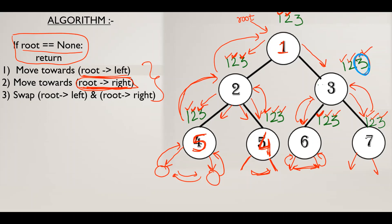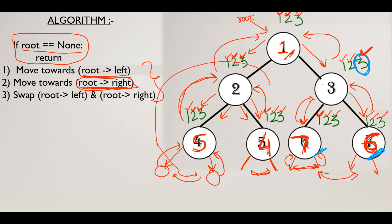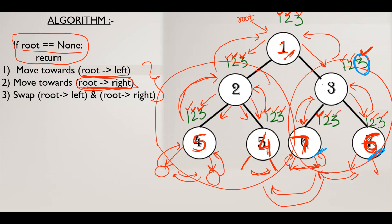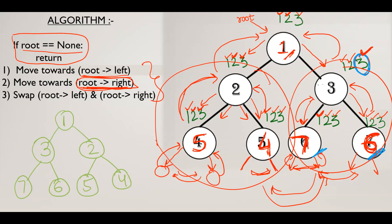On the third step of the three node, it swaps six and seven — root.left and root.right — so here we get seven and here six. After completing this third step on the three node, it returns, and then the third step of the one node swaps these two groups. So the final result is: one at the root, with three on the left having seven and six as children, and two on the right having five and four as children. This is what we learned manually.